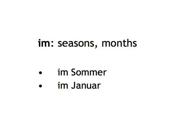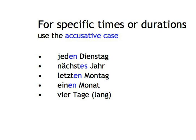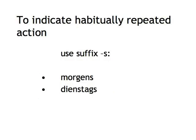To indicate the year, as in English — '1987' — there's no preposition. For specific times or durations, use the accusative case: jeden Dienstag, nächstes Jahr, letzten Montag, einen Monat, vier Tage, vier Tage lang. To indicate habitually repeated action, use the suffix -s: morgens, dienstags — it's like saying 'Tuesdays.'